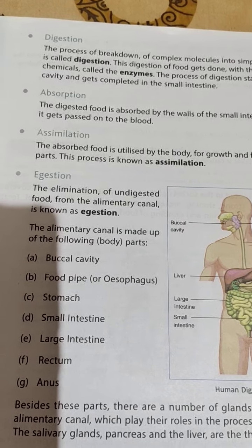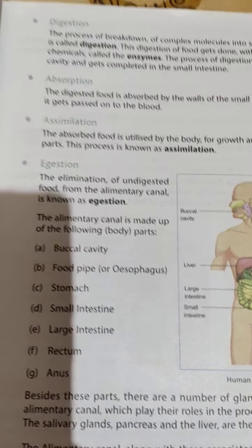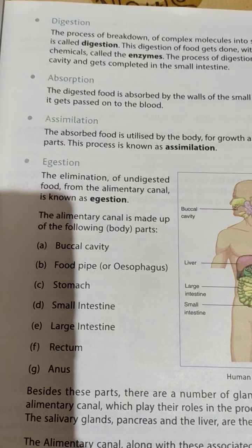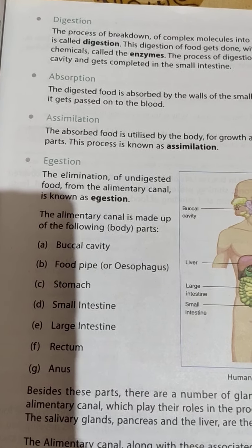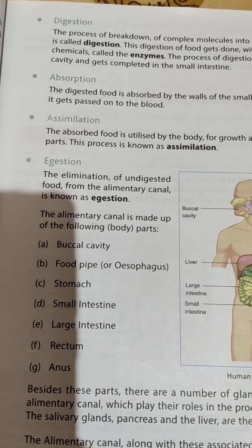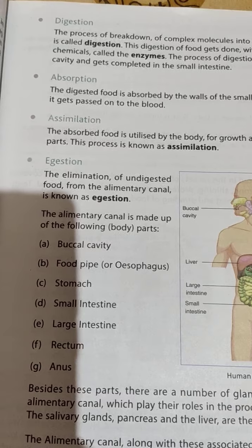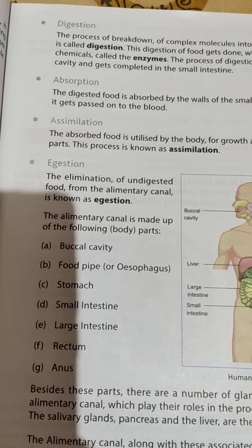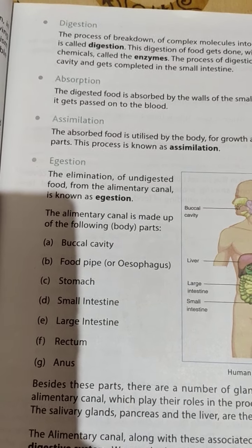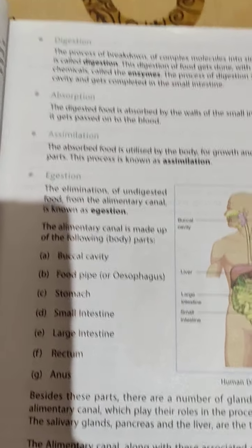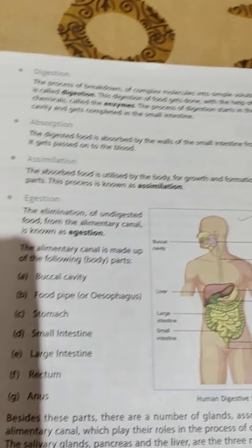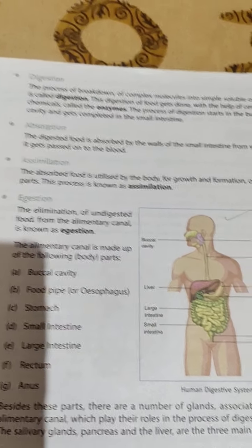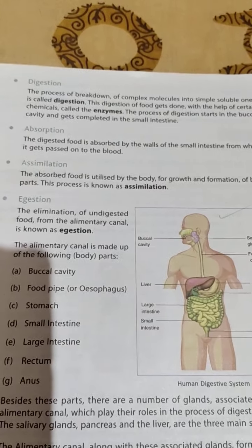What are the parts of the alimentary canal? They are: buccal cavity, food pipe, stomach, small intestine, large intestine, rectum, and anus. Read the chapter up to this point. That's all for today. Have a good day.